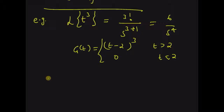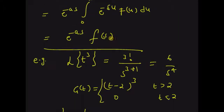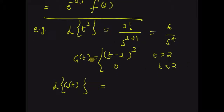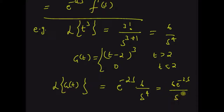Therefore the Laplace transform of g(t), by using the shifting property, should be equal to e^(-as) F(s). Here a = 2, so it should be e^(-2s) into F(s), which is 6 / s⁴. Therefore this is equal to 6 e^(-2s) / s⁴. Thus we can use the translation in time property of Laplace transforms to find the Laplace transform of these types of functions. Thanks for watching.